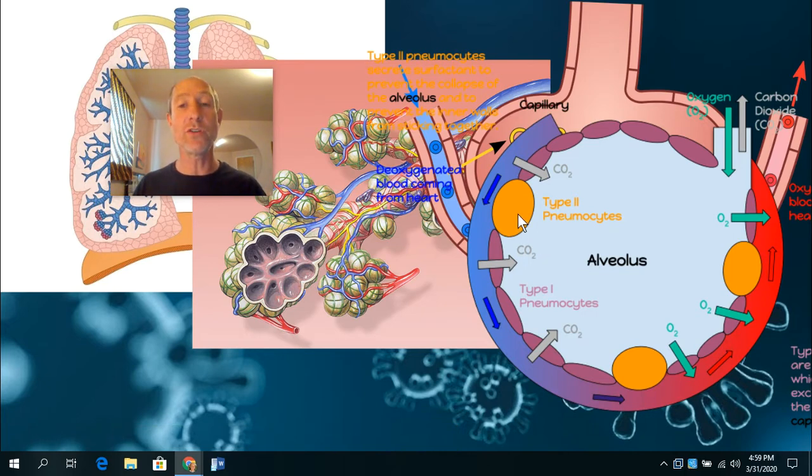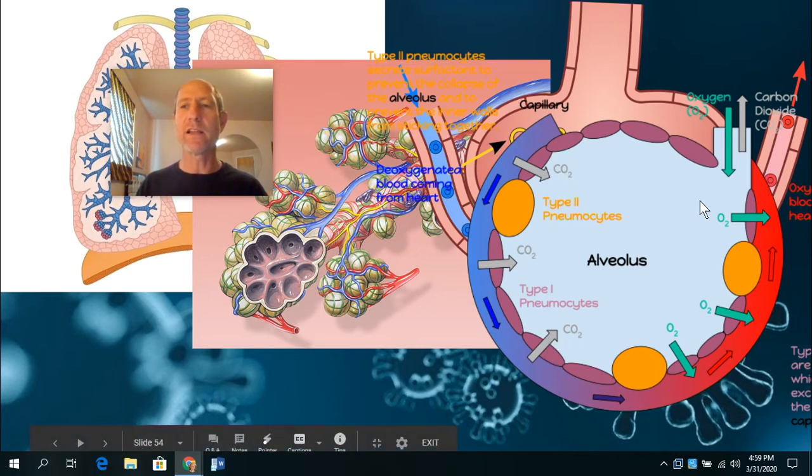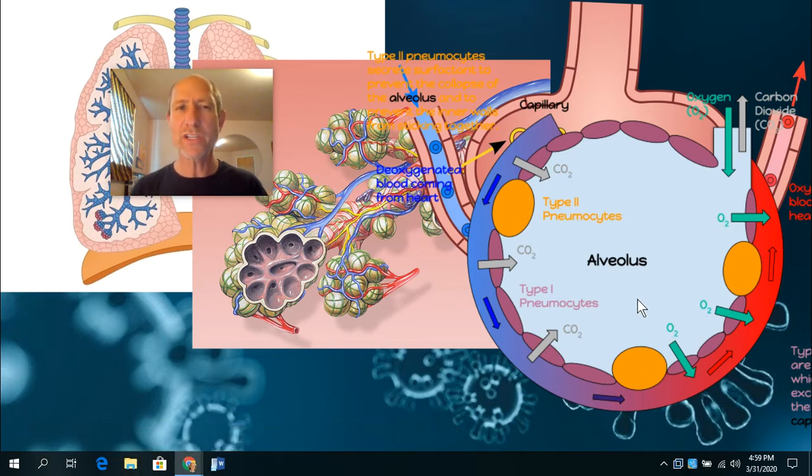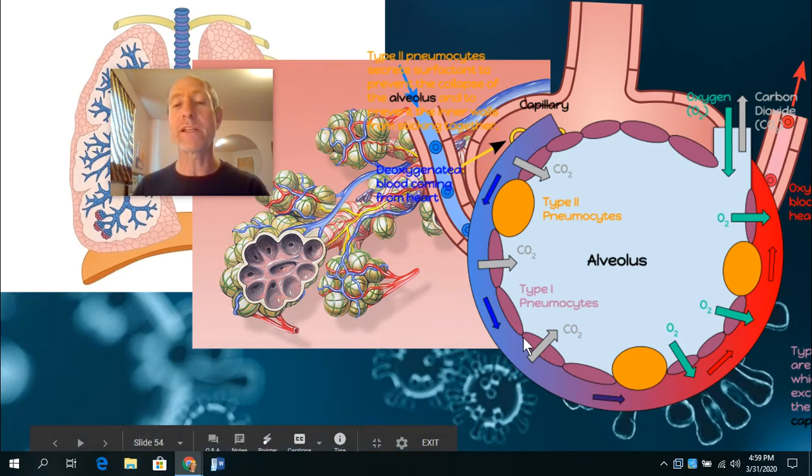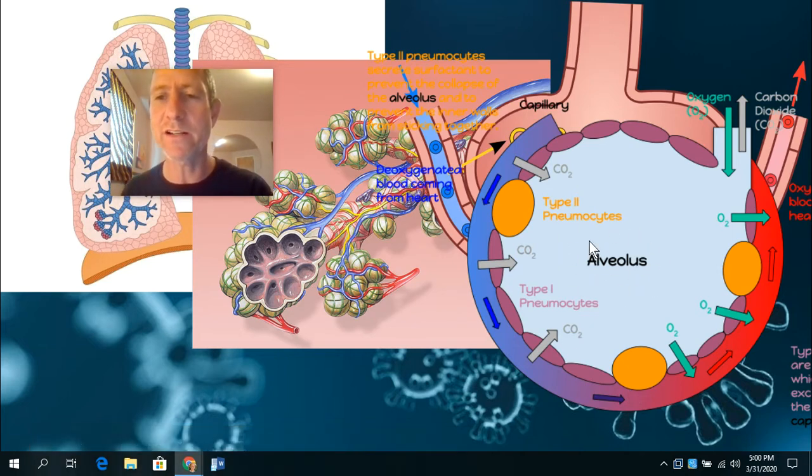And if you look at where the carbon dioxide and the oxygen are crossing, which type of cells are they crossing through? Which type of cells are the carbon dioxide and oxygen passing through? That's right. The carbon dioxide and the oxygen are passing through the type one pneumocytes, not the type two pneumocytes. So we can infer from that, that type one pneumocytes are the place where the gas exchange happens. That's the place where the carbon dioxide and the oxygen pass from the capillary into or out of the air space in the center of the alveolus.